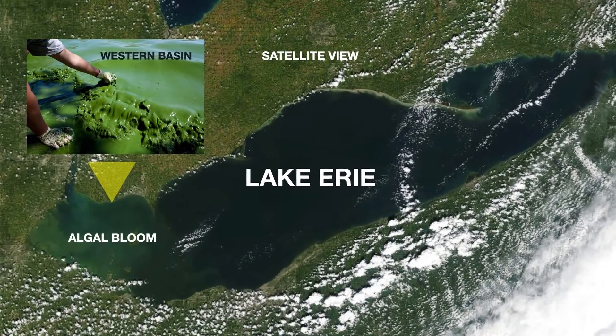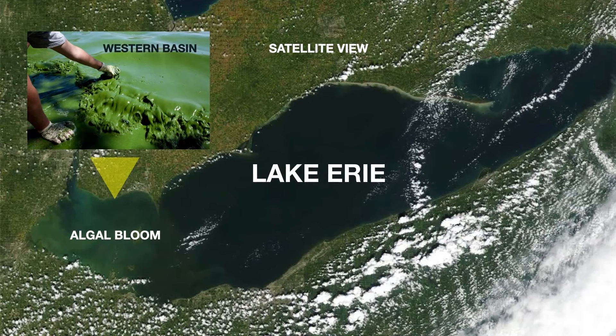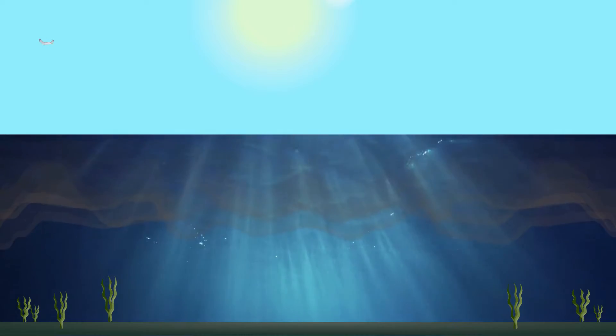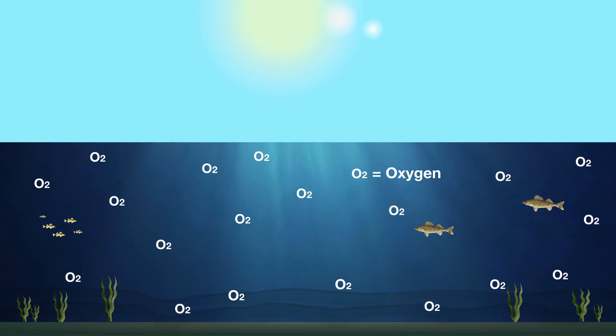Algal blooms in the western basin of Lake Erie have become a major concern in recent years. When algae and other organic matter in Lake Erie die, they settle to the bottom and decay. The decomposition process causes water near the bottom of the lake to become very low in oxygen, or hypoxic.